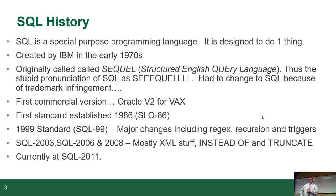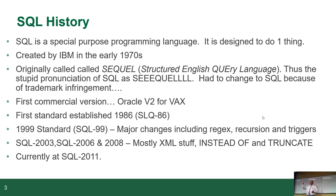SQL is what they call a special purpose programming language — it's designed to do one thing. Java, PHP, or Python are general purpose languages; you can do all kinds of things with them. A special purpose language is designed to do one thing and do it well. It doesn't mean it's a nice language, but it means it's going to do it well.